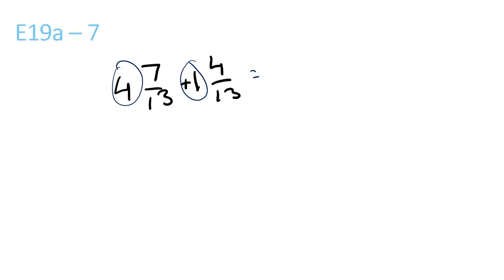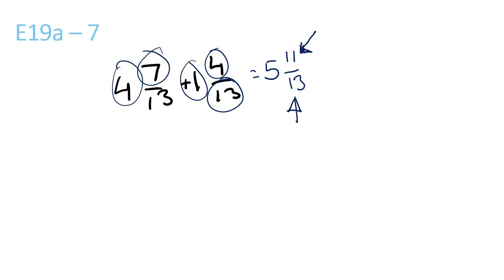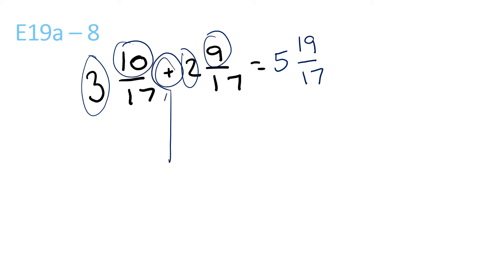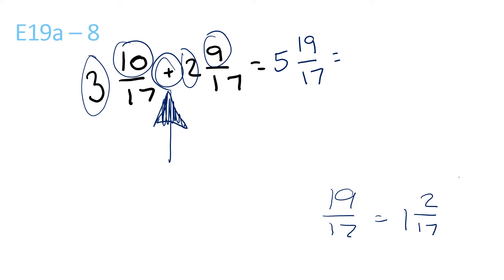4 plus 1 is equal to 5. 7 plus 4 is 11, and 13 stays the same. Since the top one is smaller than the bottom one, that means you don't need to do anything else to it. So, 3 plus 2 is 5. 10 plus 9 is 19 over 17 — and we're doing plus because of the plus symbol here, because the 17 stays the same. 19 over 17 is equal to 1 and 2 over 17, because 17 goes into 19 once with a remainder of 2 over 17. So you get 1 and 2 over 17 plus 5, which equals 6 and 2 over 17.